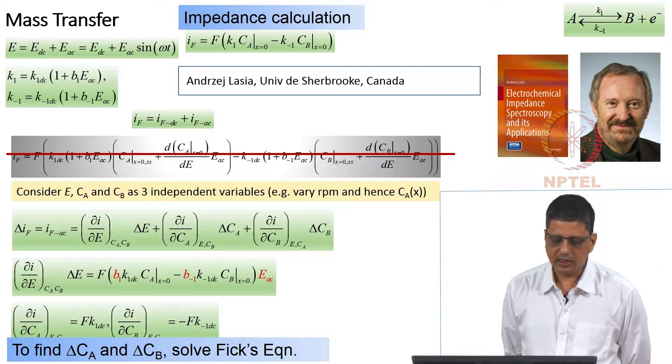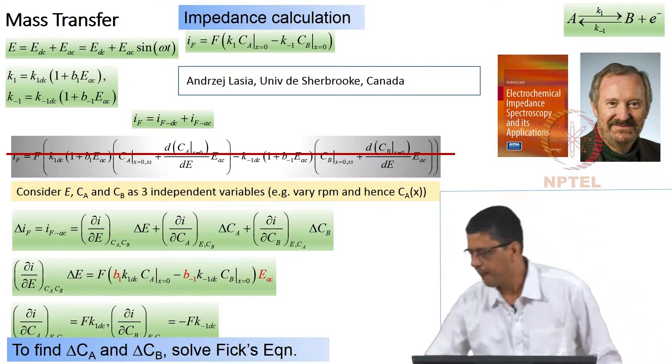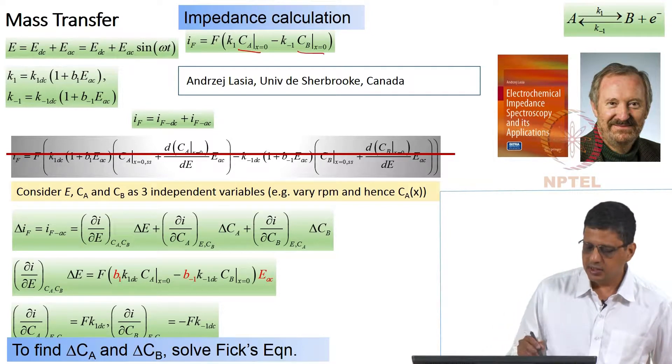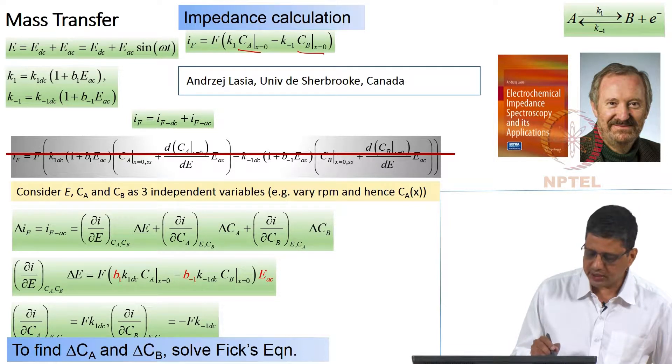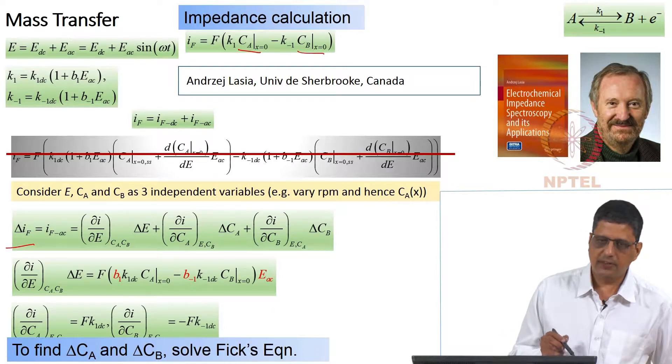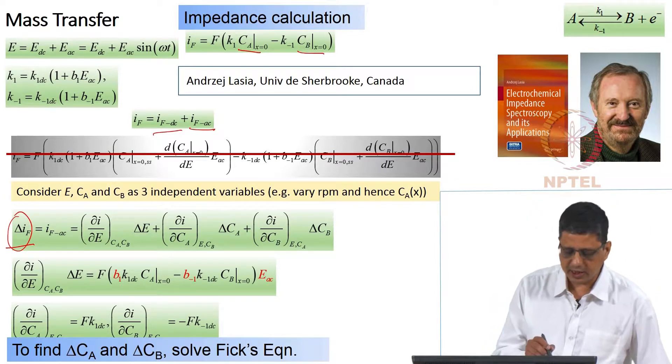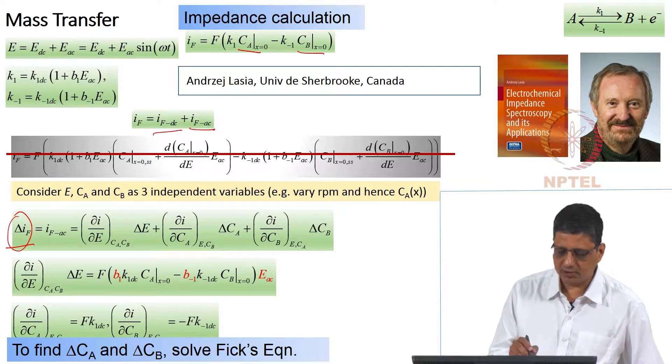Instead of looking at the concentrations, the concentration here as a function of E_AC oscillating around DC, we have looked at it differently. We write potential C_A and C_B as three independent variables. So we will write del I_F. So del I_F represents the fluctuating part of the current. I_DC plus I_AC is what we would normally write and I_F_AC here is represented by del I_F. We can write it as partial derivative with respect to E, partial derivative of I with respect to C_A, C_B and then multiply by the corresponding fluctuations there.